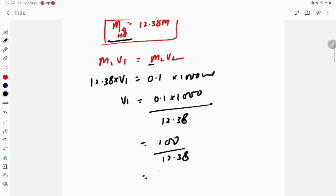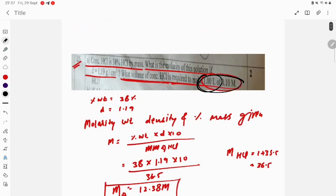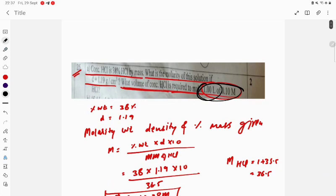8.07 ml. So V1 required is 8.07 ml to reach the concentration of 1 liter of 0.10 molar solution. This is the answer. Thank you very much for watching.